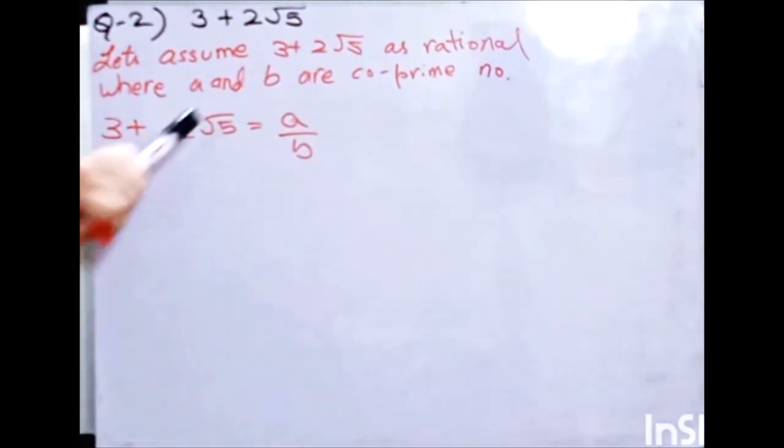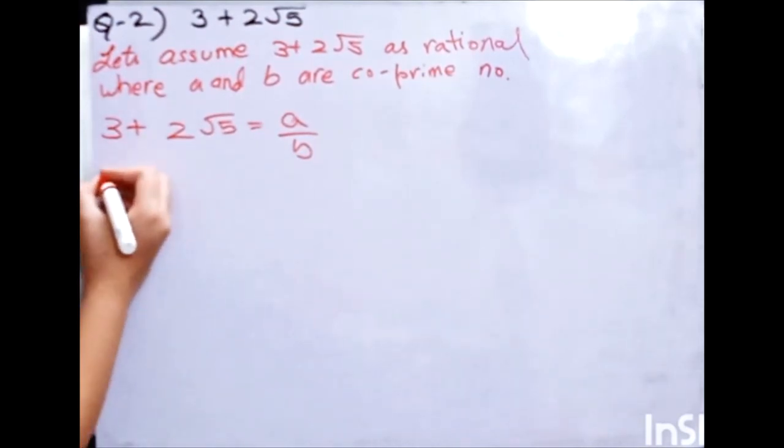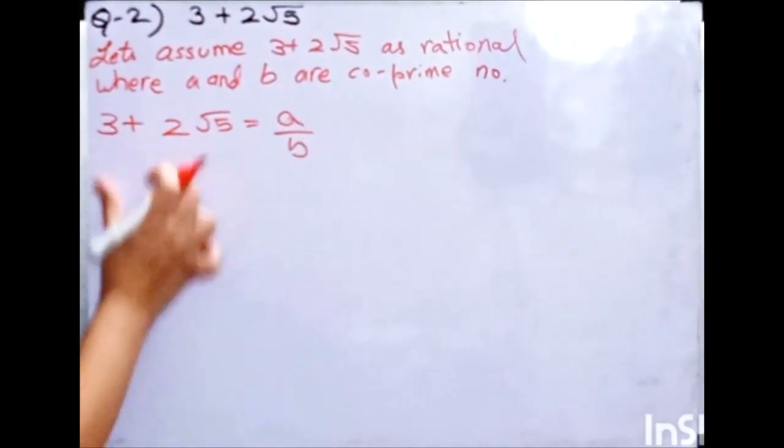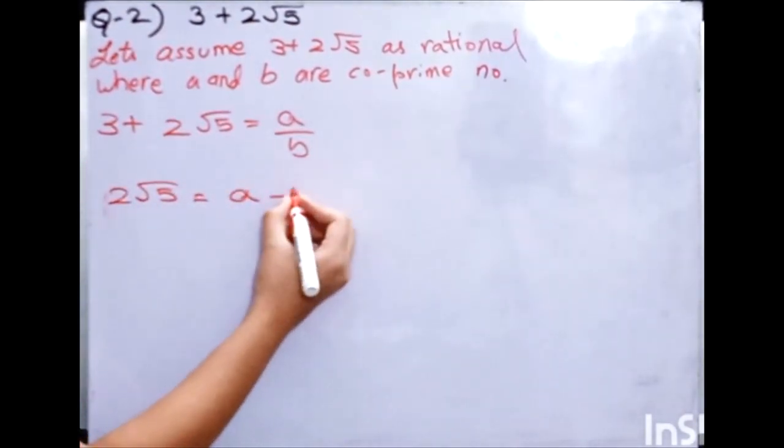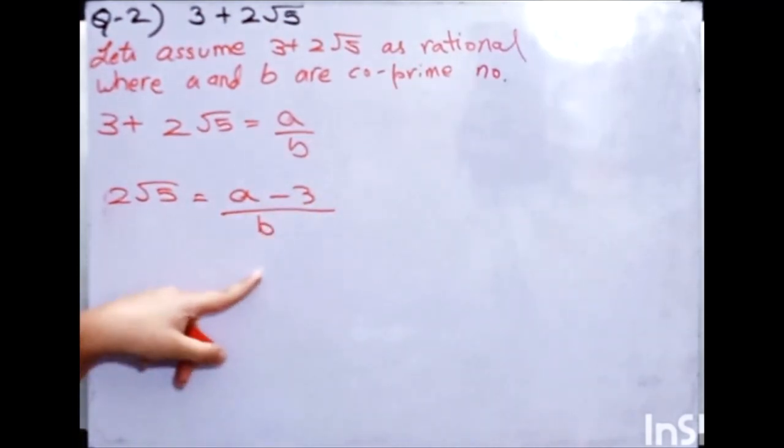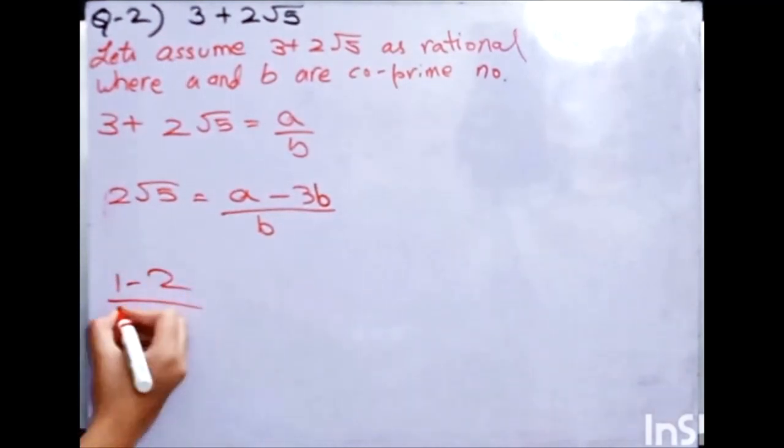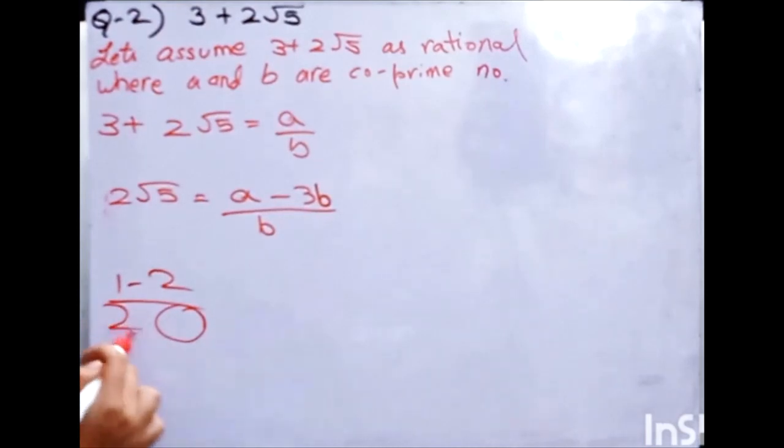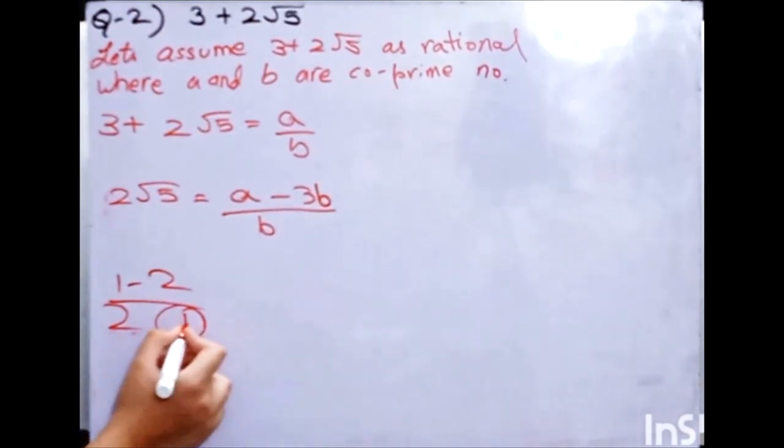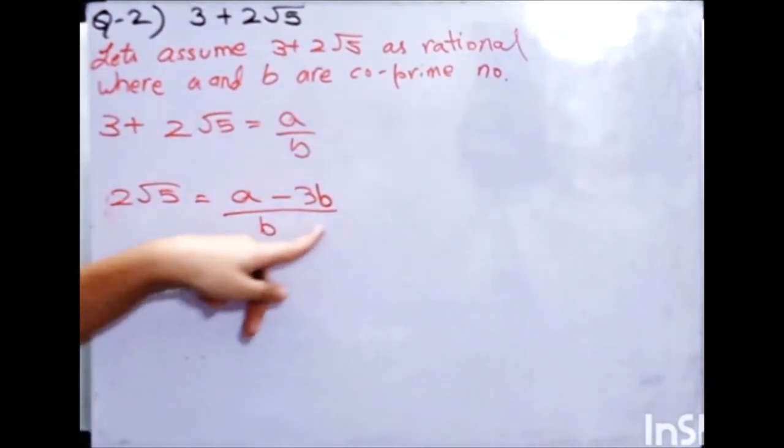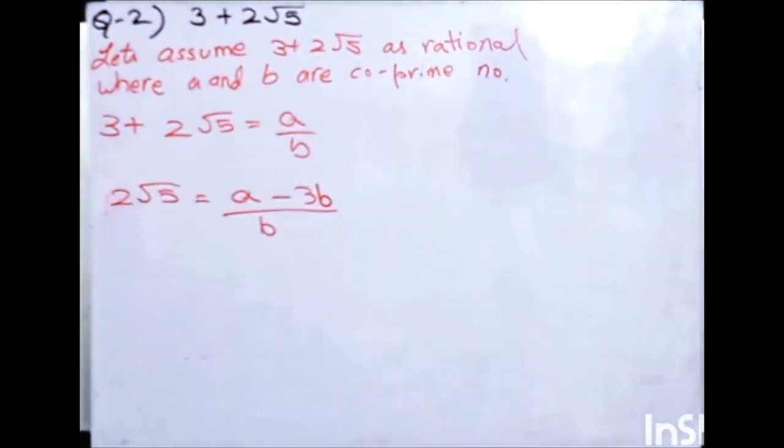Now, 3 plus, so here it will come as minus. So 3 is here and what we have to do? 2 root 5 equals to a minus 3b. Now, I will have to take LCM. Here is 1 and b. So I will take LCM of 1b and this will be 1b. A minus 3b upon b. Remember if we have any number here, for subtracting I need to make the denominator same. This is the basic concept which we learnt in our previous classes.